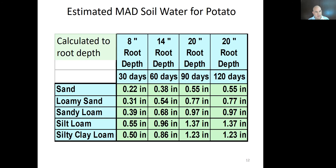Here's a table showing estimated MAD water for a potato crop at 35% of plant available water, varying by soil type and by season. Early season with only eight inches of roots, you can see how little water is available. As roots go deeper, we get more — a bigger bank account. For example, with a sandy loam soil at 120 days, I have about one inch of MAD water. Losing 0.25 inches per day means irrigating every four days.